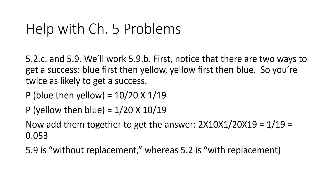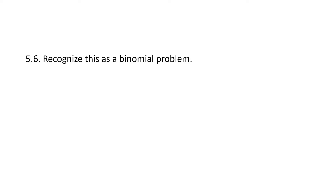Question 2 in chapter 5 is very similar to this one, but question 5.2 is with replacement. What that would mean is instead of having 19 in the denominator the second time, if we took a marble out and then put it back in, you'd have 20 there. With 5.2 there are different numbers — different cloth colors for example — but the same logic applies.